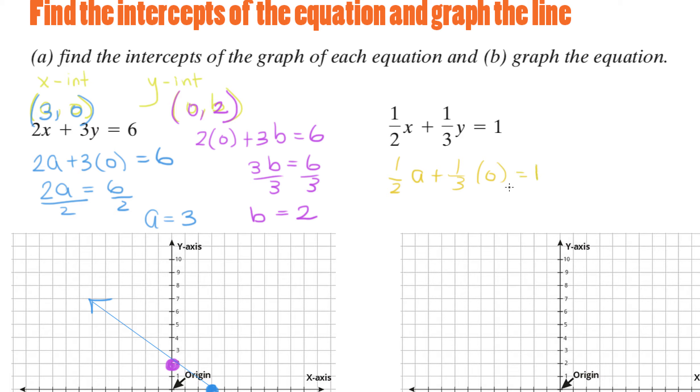For the y-intercept, we plug in b for y and 0 for x. So one half times 0 plus one third b equals 1. That means that one third b equals 1. Again, we multiply by the reciprocal on both sides, so b equals 3. Therefore, your y-intercept is (0, 3).